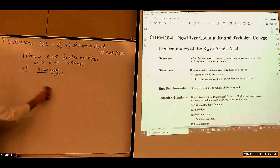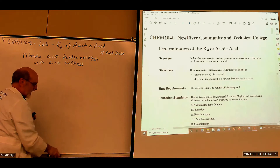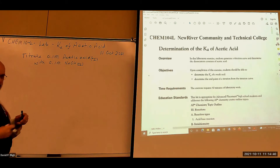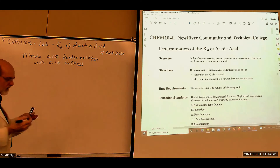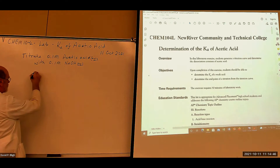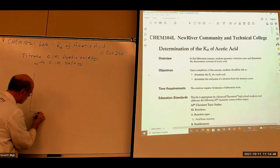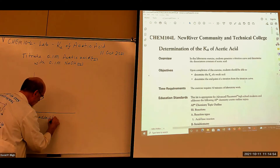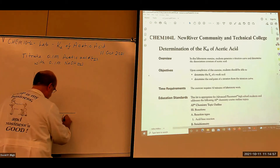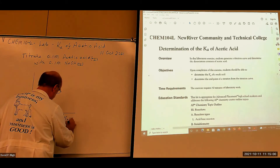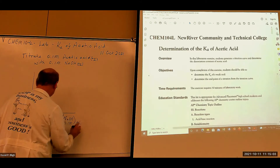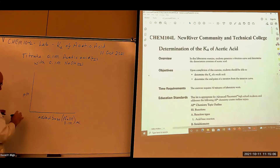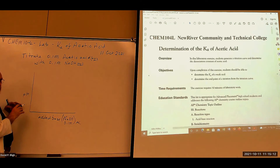So when you do that, follow the procedure and get all that information, we're going to plot that graph. The x-axis is added base — sodium hydroxide, 0.1 molar, in milliliters — and the y-axis is pH. What you're going to find is that you're going to start off at a pH in the neighborhood of three and a half or so.